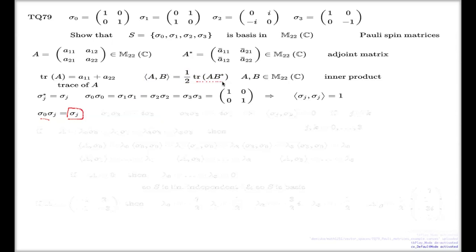When you take the trace of such a product, look at this: trace of sigma 1 is 0 because elements are 0. Trace of sigma 2 is 0. Trace of sigma 3 is 0 as well.